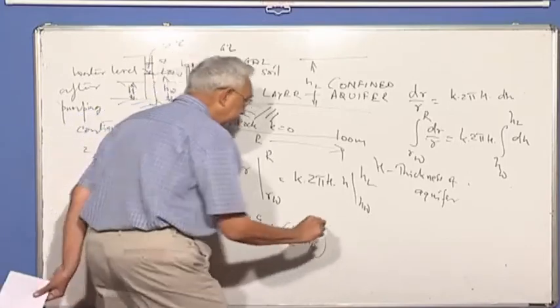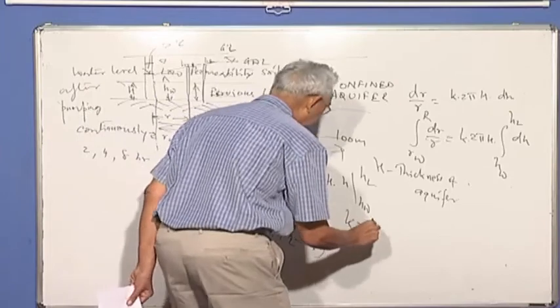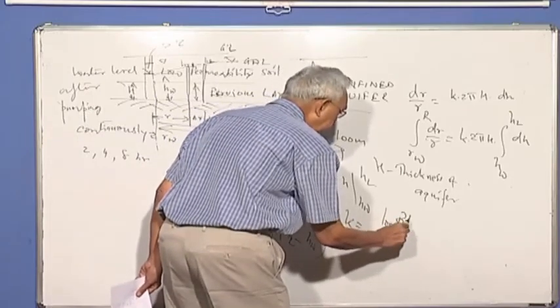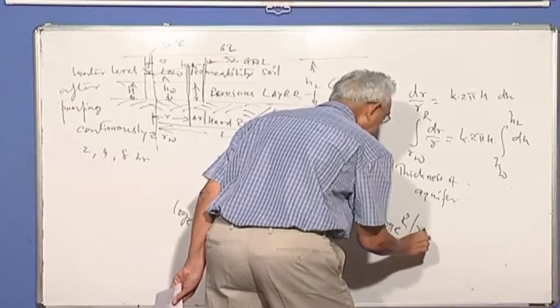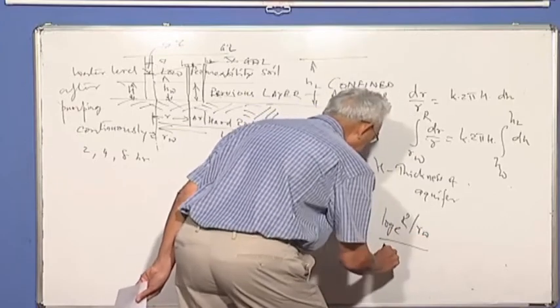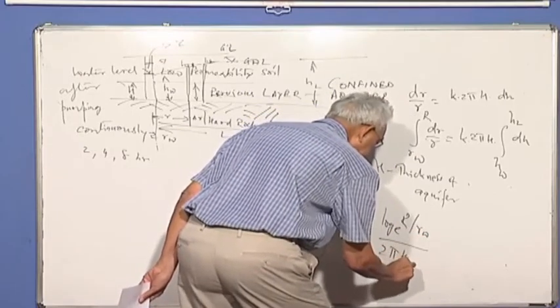So now K is equal to simply log capital R by, to the base E, by well, by 2 pi H into HL minus HW.